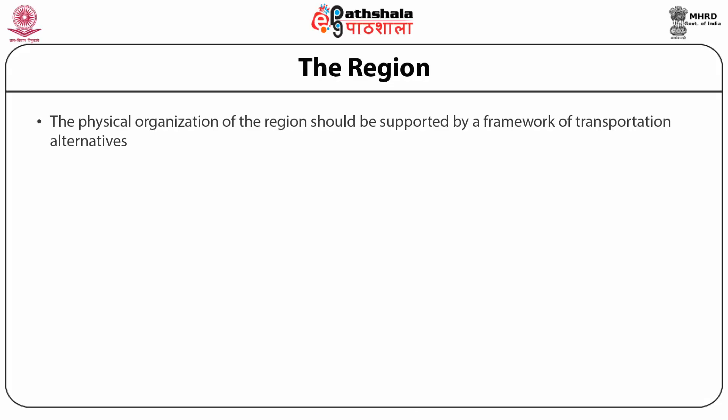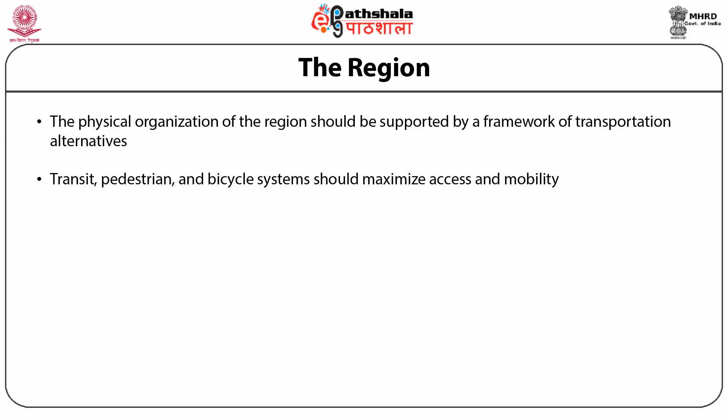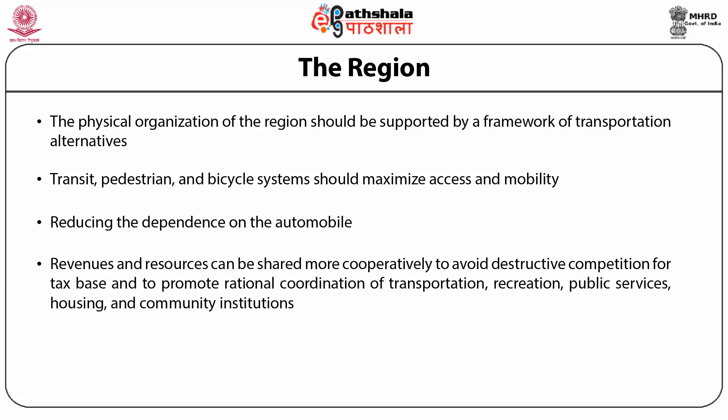Cities and towns should bring into proximity a broad spectrum of public and private uses to support a regional economy that benefits people of all incomes. Affordable housing should be distributed throughout the region to match job opportunities and to avoid concentrations of poverty. The physical organization of the region should be supported by a framework of transportation alternatives. Transit, pedestrian, and bicycle systems should maximize access and mobility throughout the region while reducing dependence on the automobile.